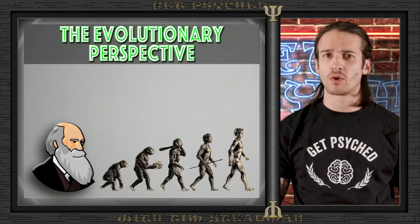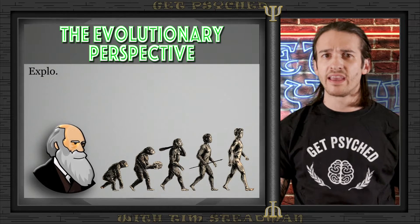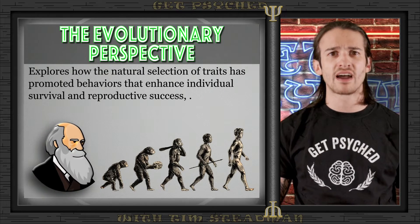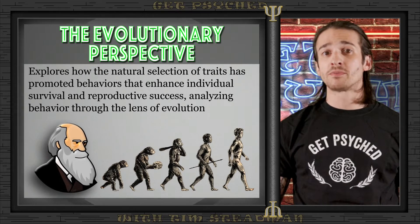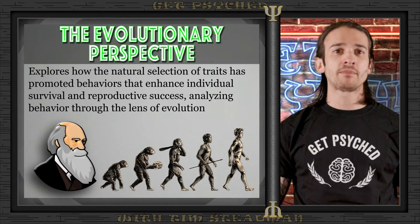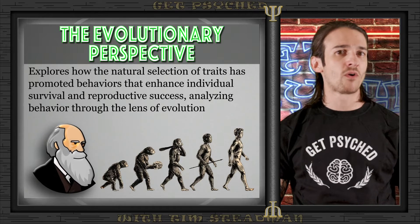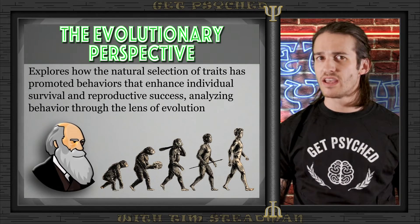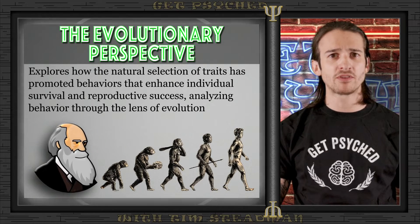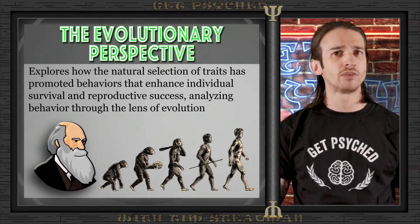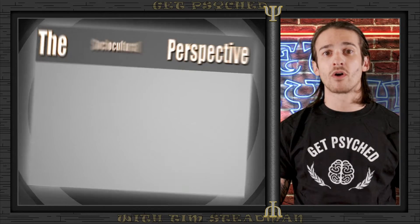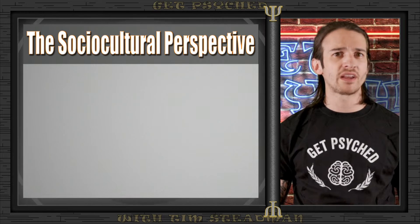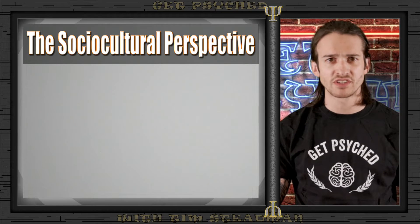Drawing from Charles Darwin's theory of natural selection, the evolutionary perspective brings the principles of evolutionary biology into psychology. This approach, which gained prominence in the late 20th century, examines how evolutionary history shapes our psychological traits and behaviors, explaining behavior as adaptations that have evolved to solve problems of survival and reproduction — suggesting that many common behaviors today have evolutionary purposes.